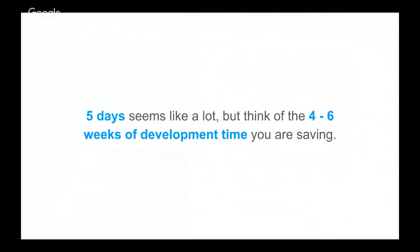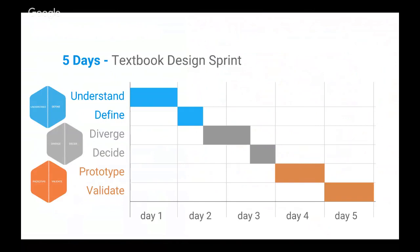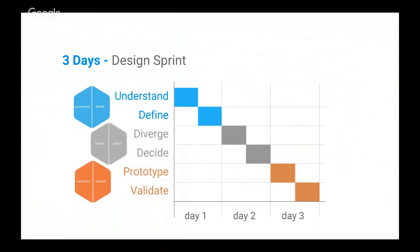Five days seems like a lot, and it's especially hard when you're trying to convince stakeholders and your team to stop doing whatever they're doing and commit everything nine to five to the sprint. But put it in context of the four to six weeks of development time and associated costs you're saving — and then it doesn't seem like a lot. It really is worth the investment. You can also reduce it to a three-day design sprint — we actually do that quite often here at Google.